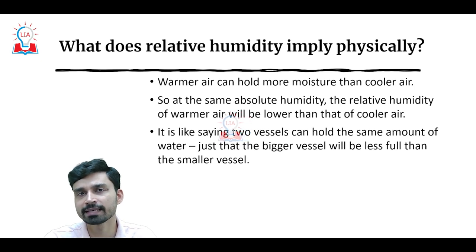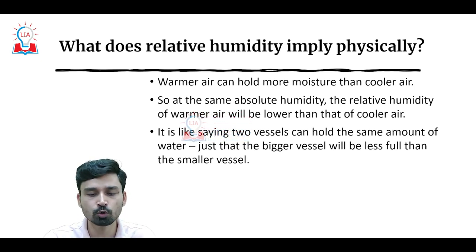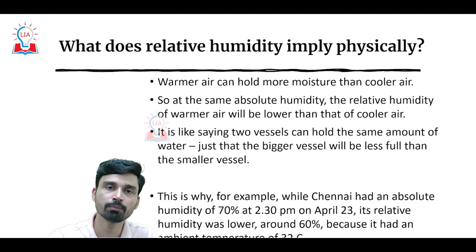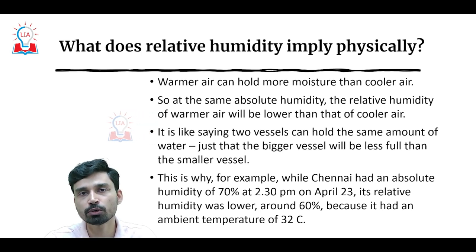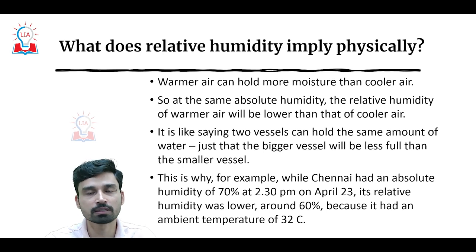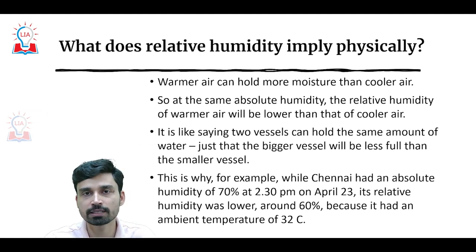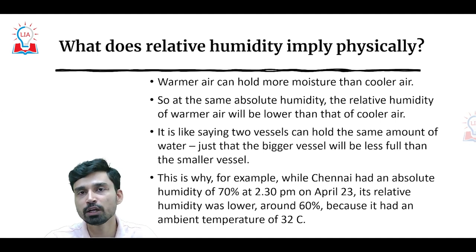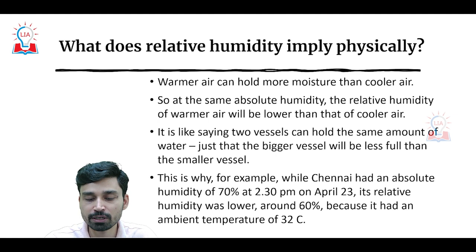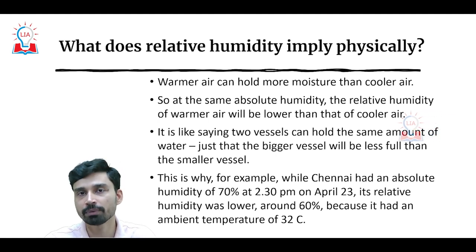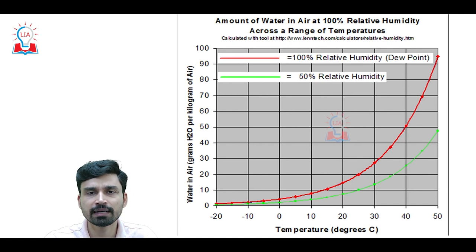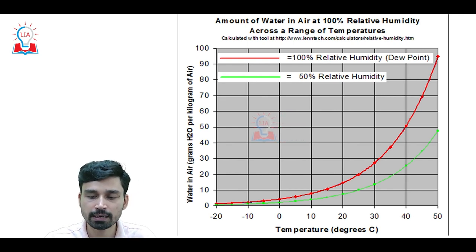This is analogous to having two different vessels which can hold the same amount of water — the bigger vessel will be less full than the smaller vessel because its volume is larger. Similarly, warmer air has a larger volume compared to colder air. For example, Chennai had an absolute humidity of 70% at 2:30 PM on April 23, but its relative humidity was much lower around 60%, because it had an ambient temperature of 32 degrees Celsius, and since the temperature is very high, RH becomes slightly lower than the absolute humidity. Also, RH does not rise in a one-to-one manner with temperature change — looking at this particular graph, RH increases at a much faster rate as temperature rises.